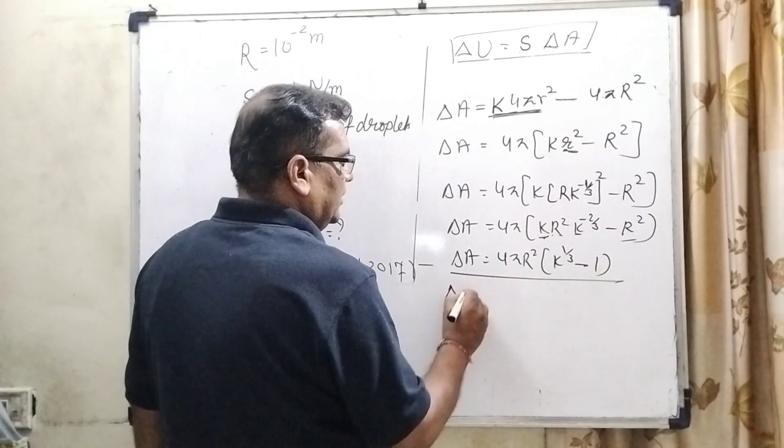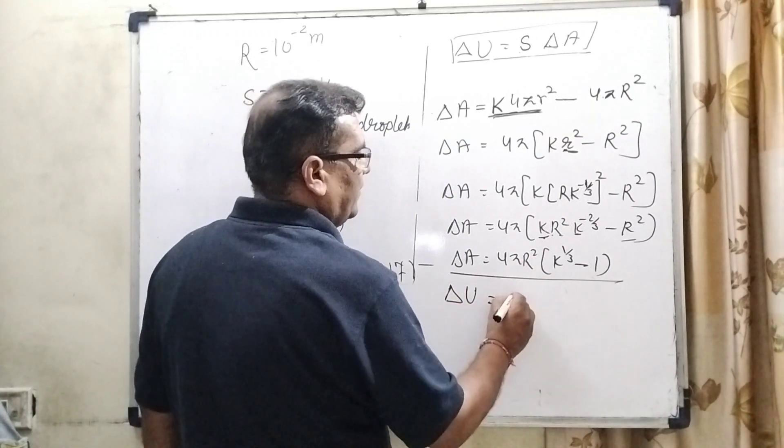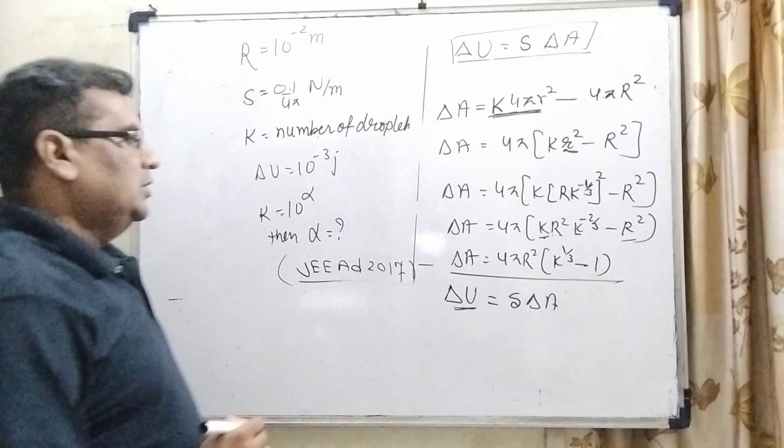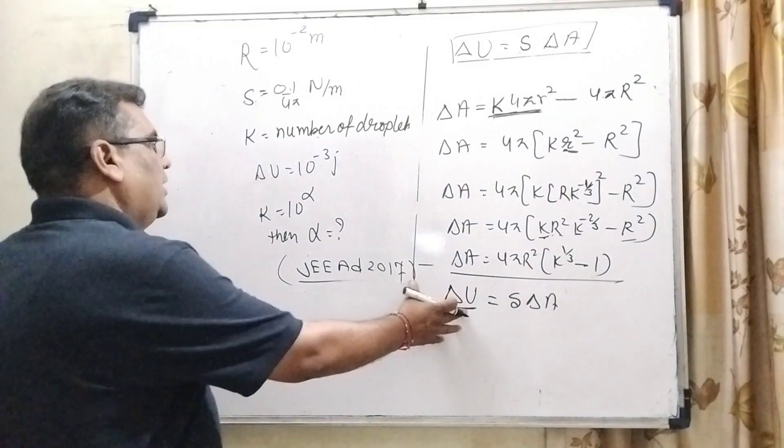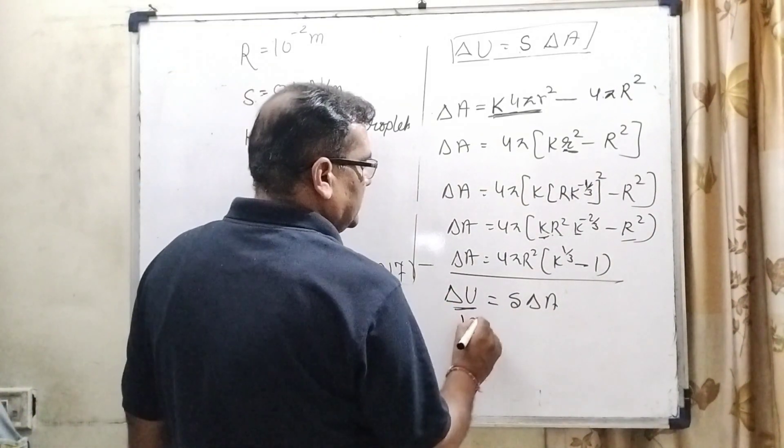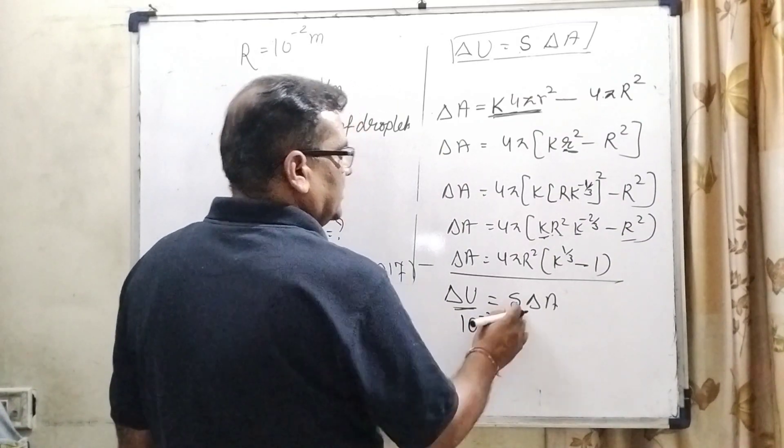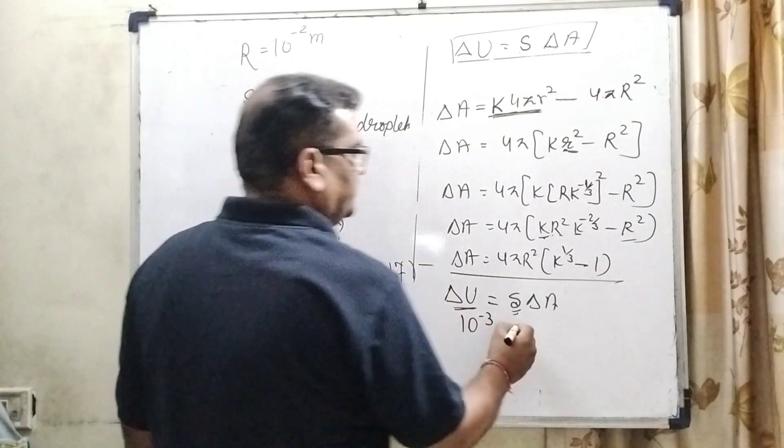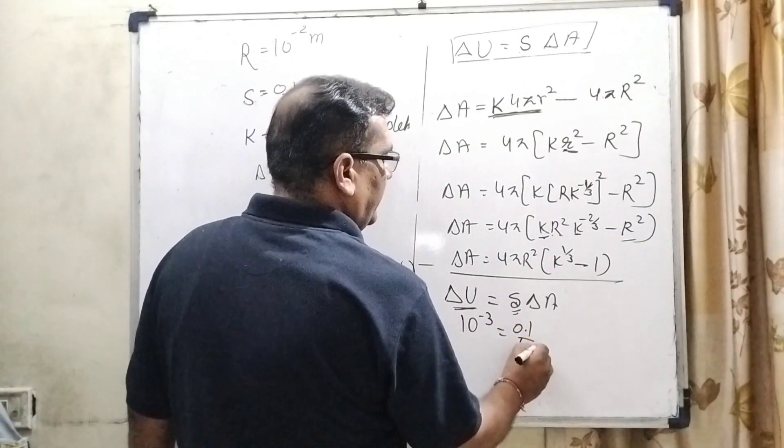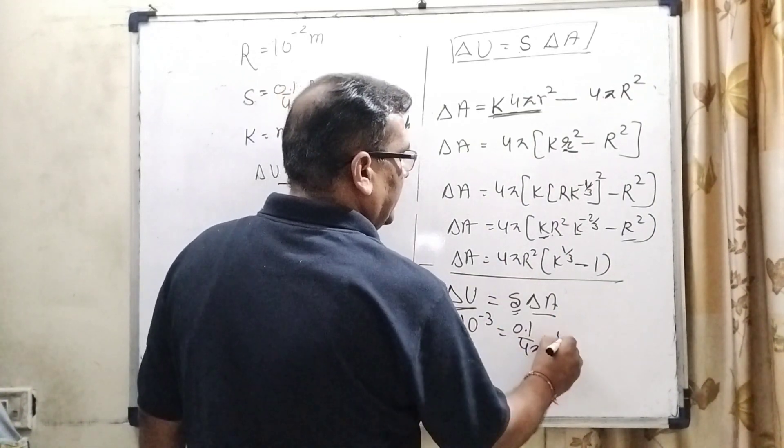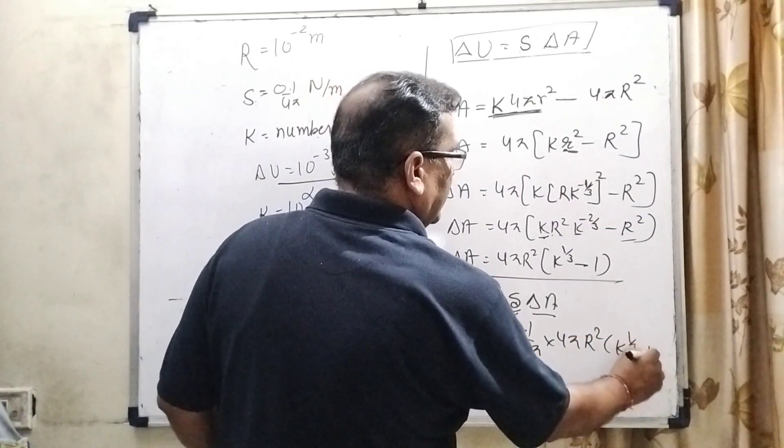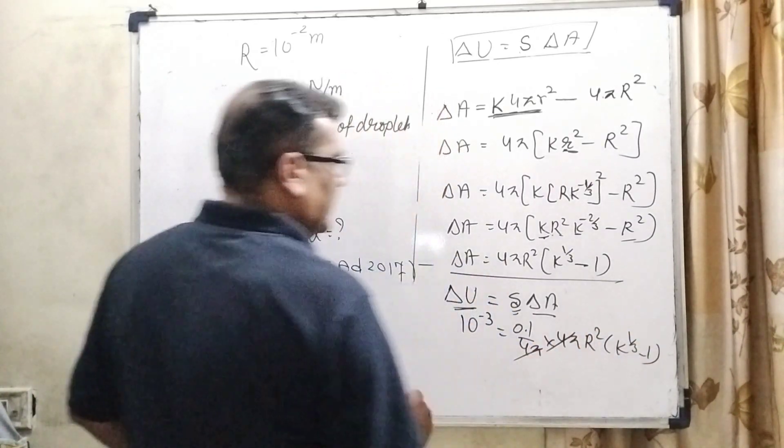Now, using the formula change in energy equal to surface tension and change in area. Here, substitute all this value. Delta U, what is delta U is given? 10 raised to power minus 3. S, surface tension. What is surface tension? 0.1 upon 4 pi and change in area already given 4 pi R square k raised to power 1 by 3 minus 1. 4 pi cancel out.